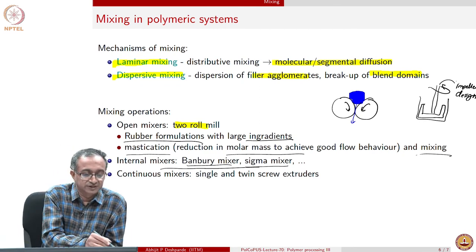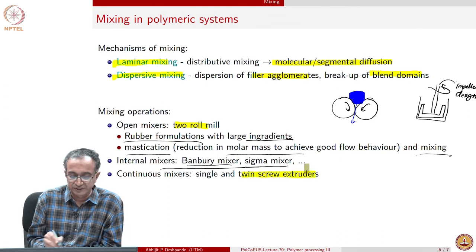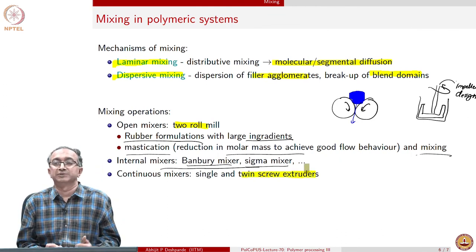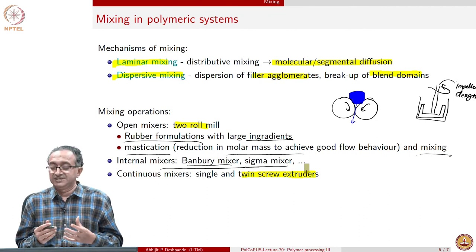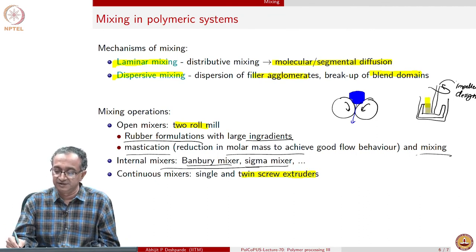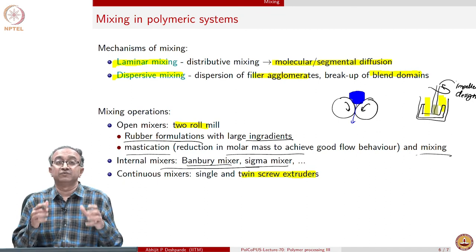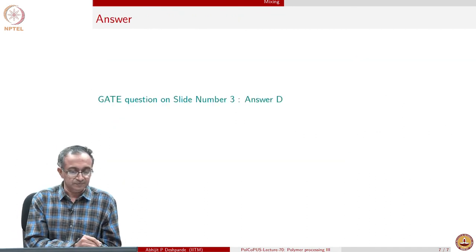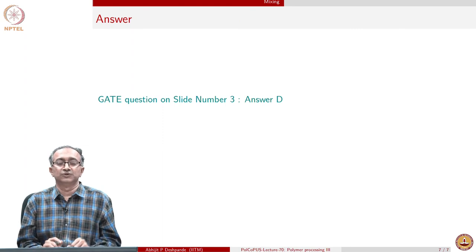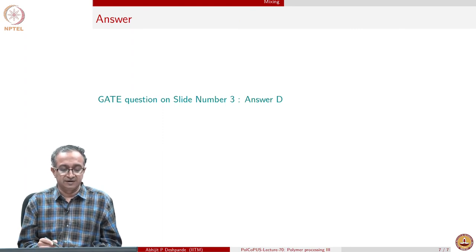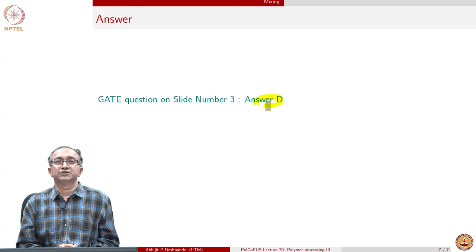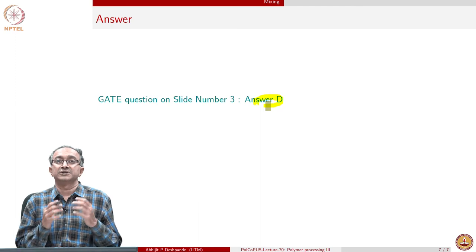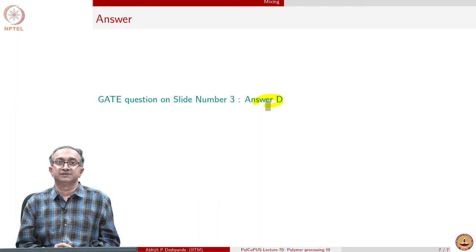We also have extruders and especially twin screw extruders which are examples of continuous mixers because internal mixers happen to be batch. You add polymer in this and then wait for it to mix. With this, we will come to close the lecture and the answer I am sure you can get based on reading related to what are the different operations that are used in rubber processing. Thank you.